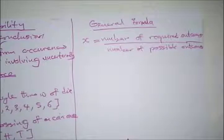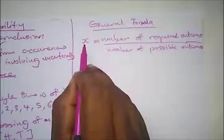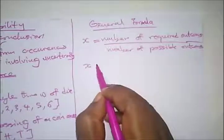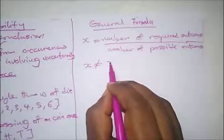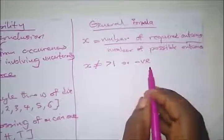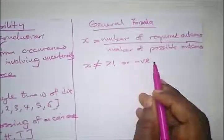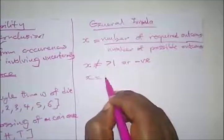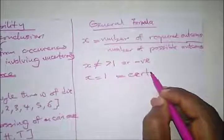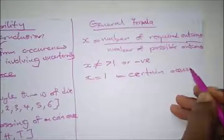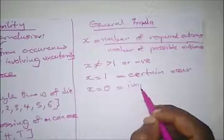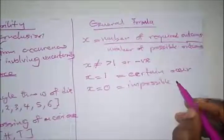There are specific things you need to know about the value of x. The value of x can never be greater than one or have a negative sign. When the value of x is one, it means the event is certain to occur — that is a guaranteed success. When x is equal to zero, it means it is impossible for that event to occur — that is a failure.